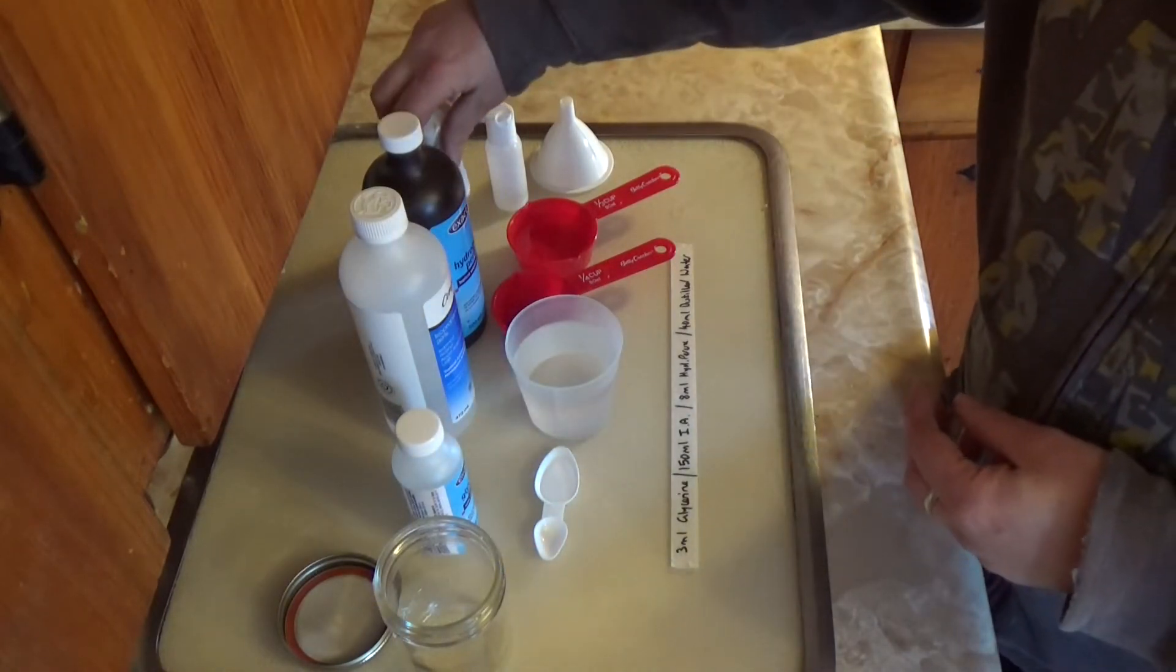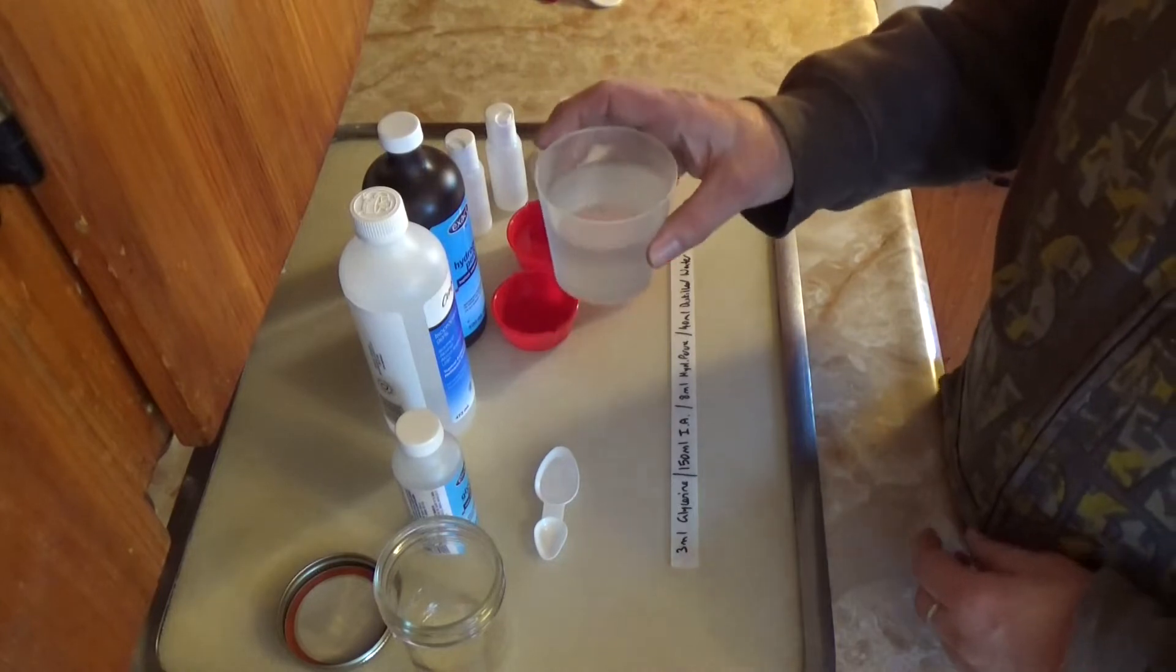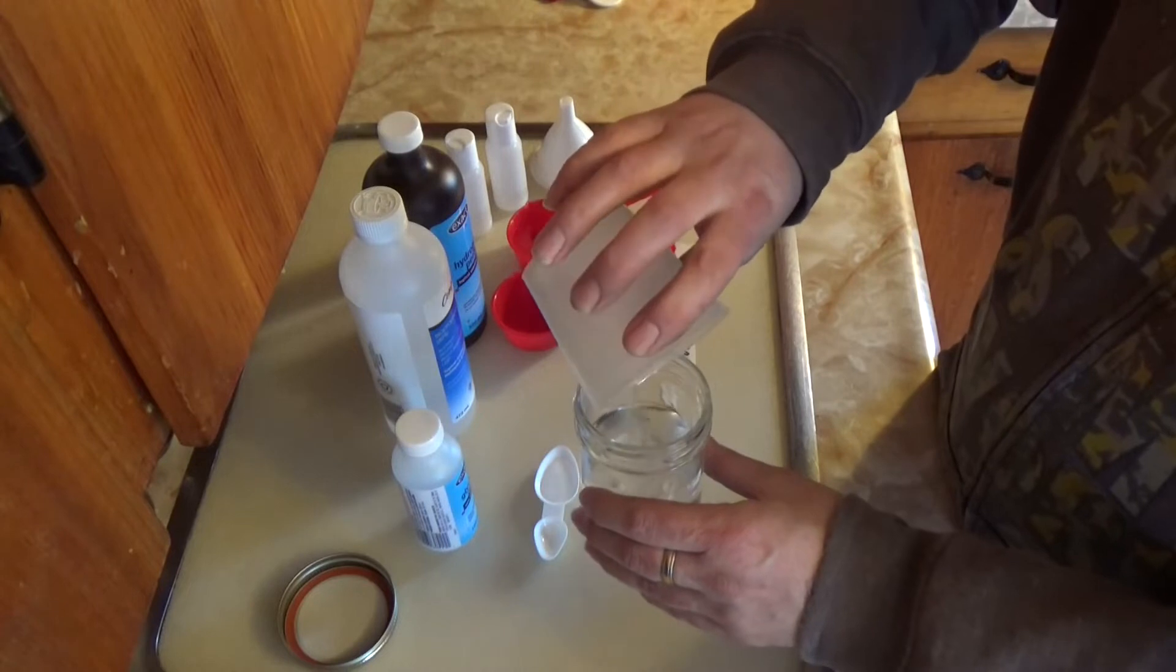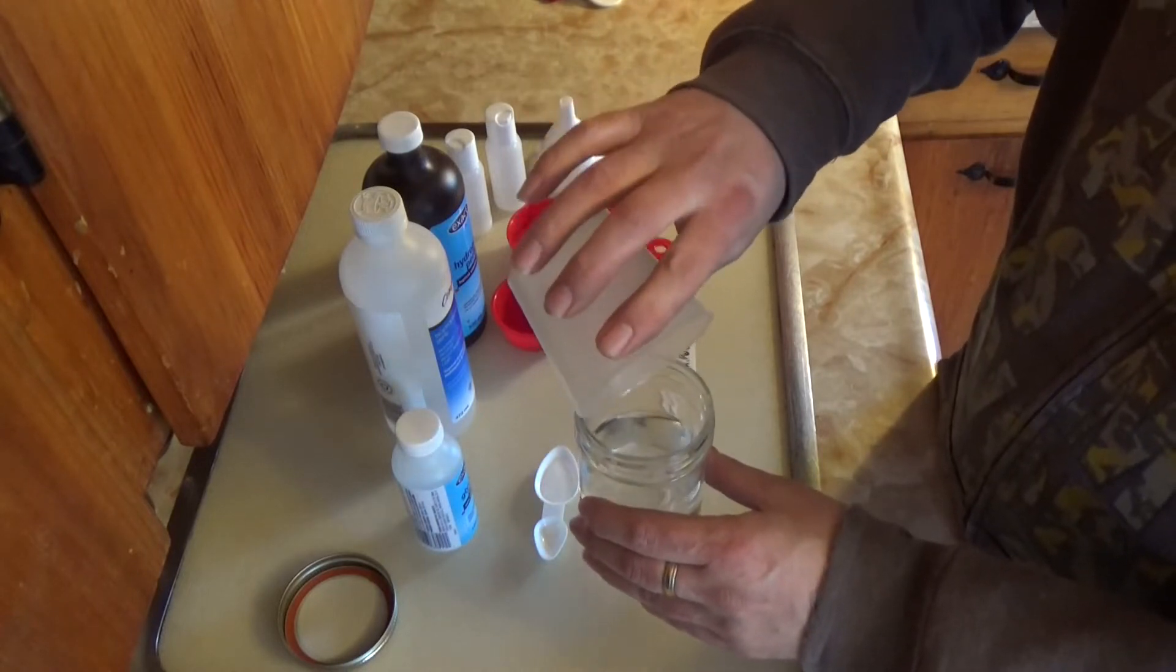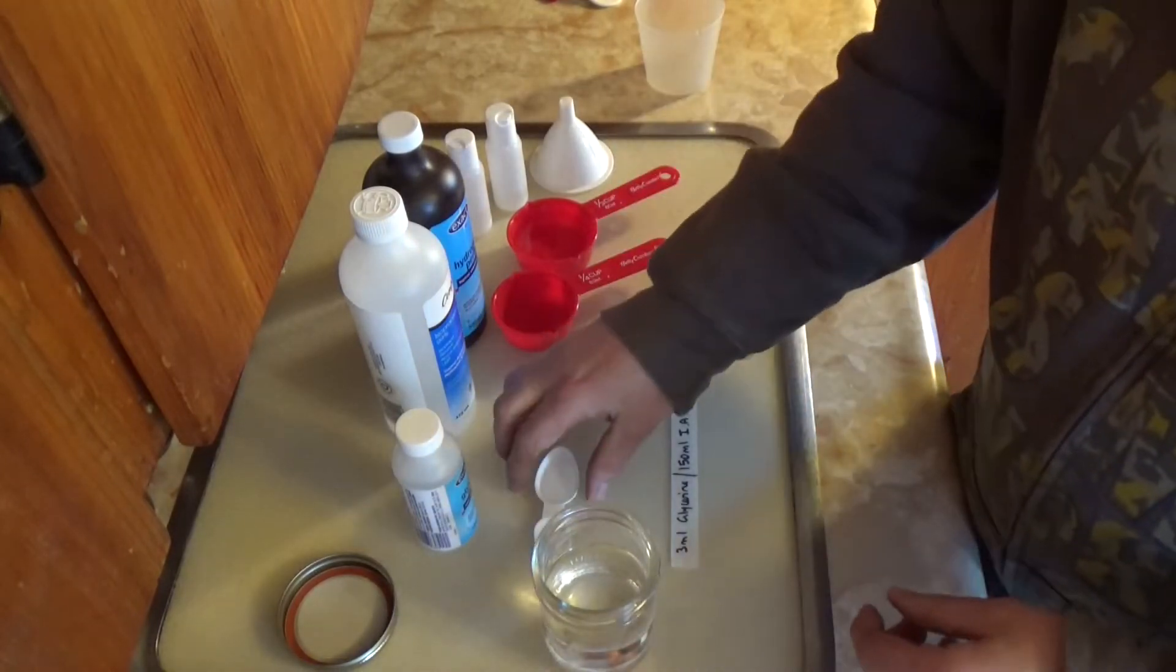So we have 150ml of isopropyl alcohol. Put that in there. You have to be careful with this stuff—it is pretty flammable, so don't do this near any flames or anything. Then we got the glycerin.